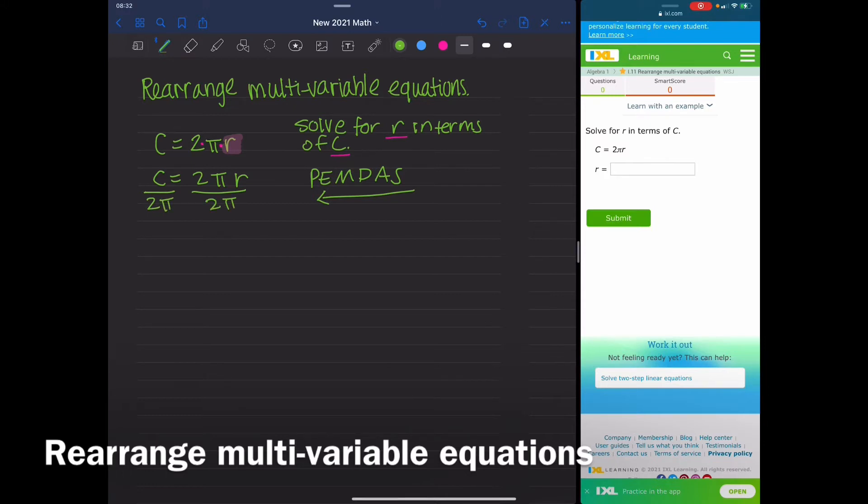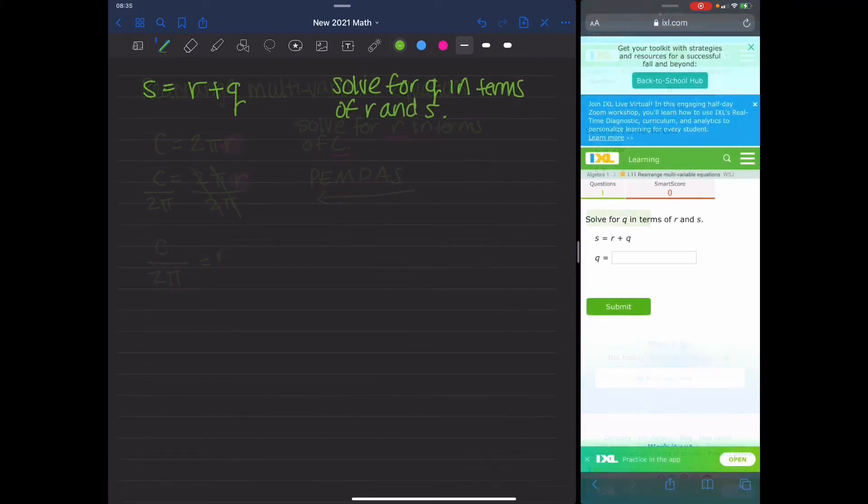Again, because I want to get R by itself. So when I do that, I'm going to have the 2s cancel out, πs cancel out, and I'm going to be left with C over 2π equals R. Okay.